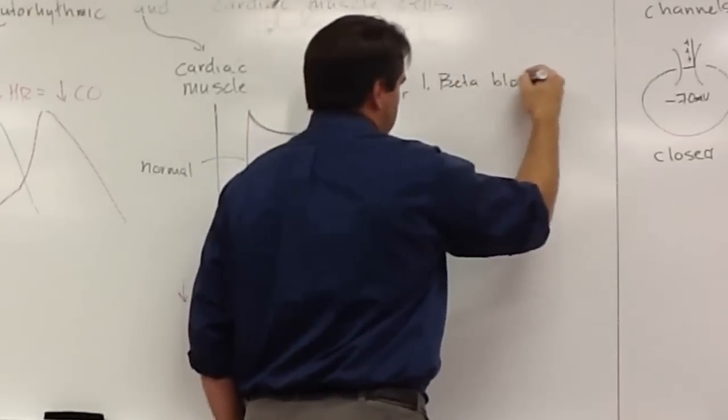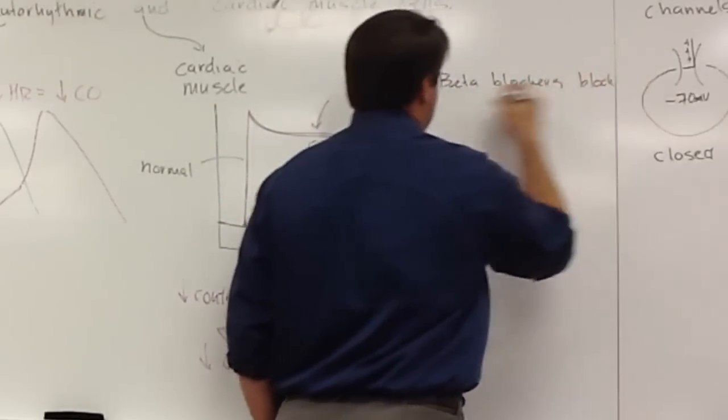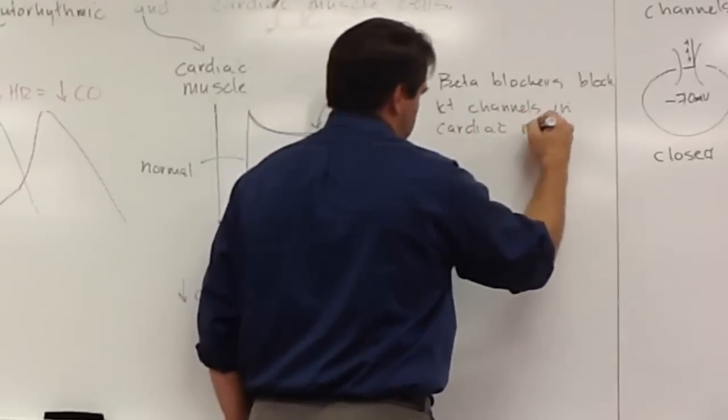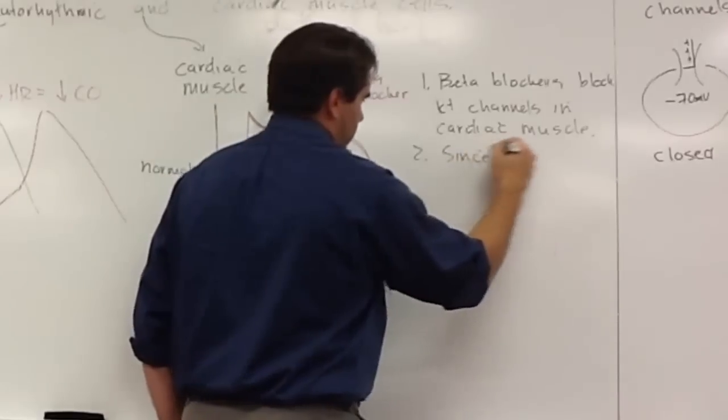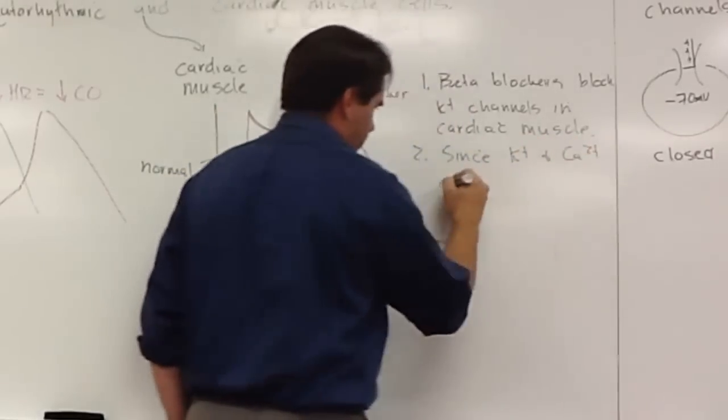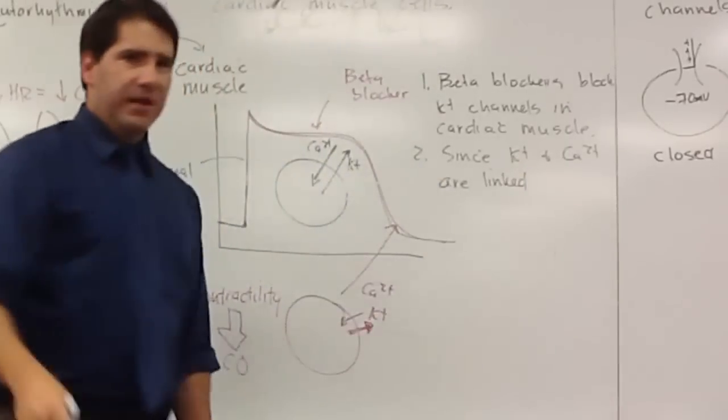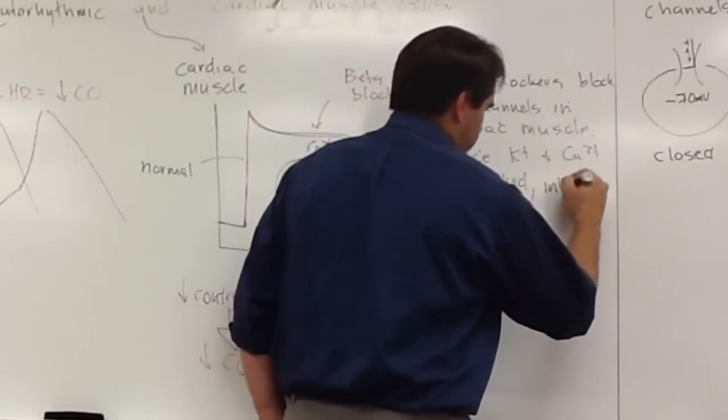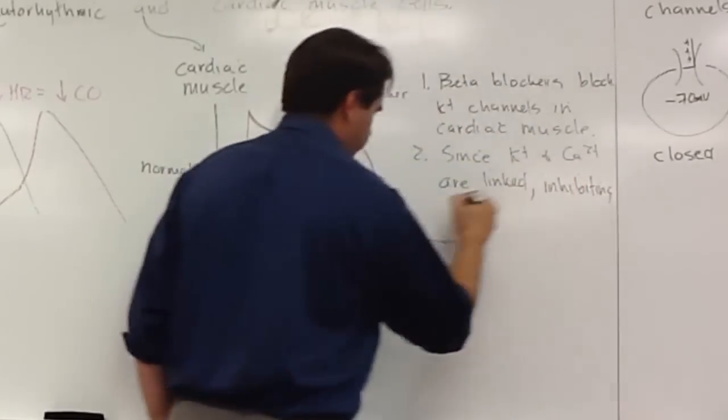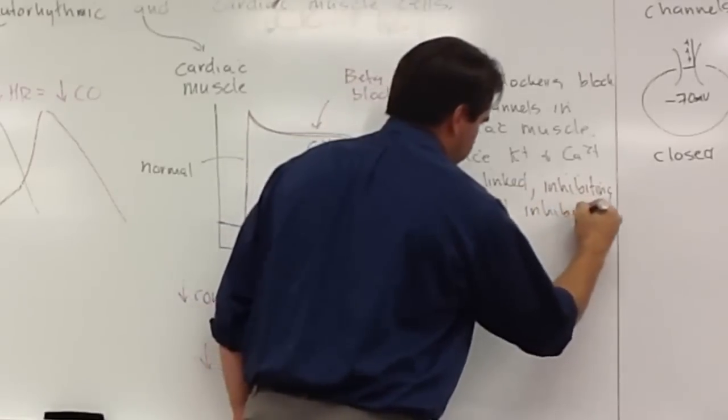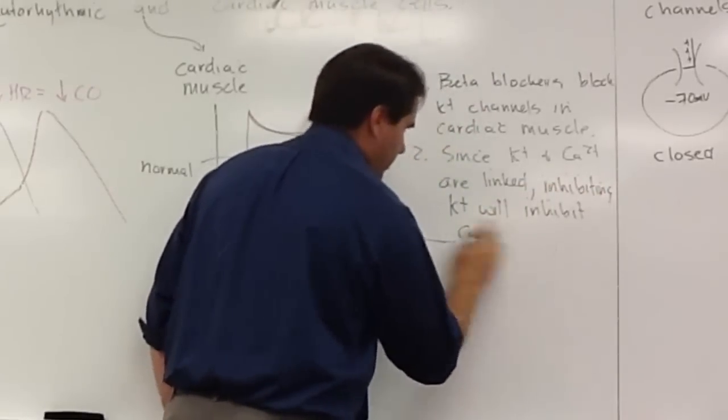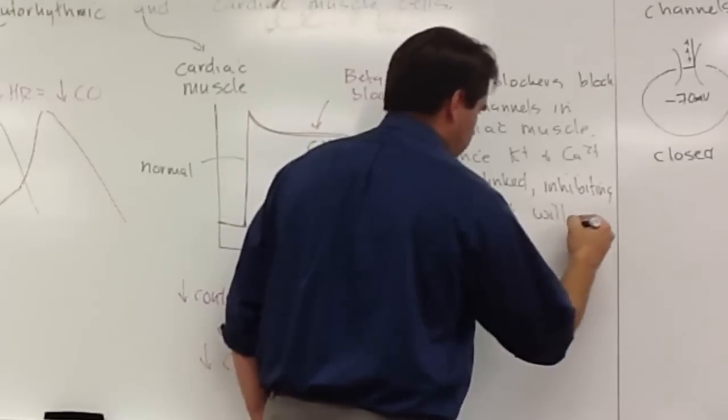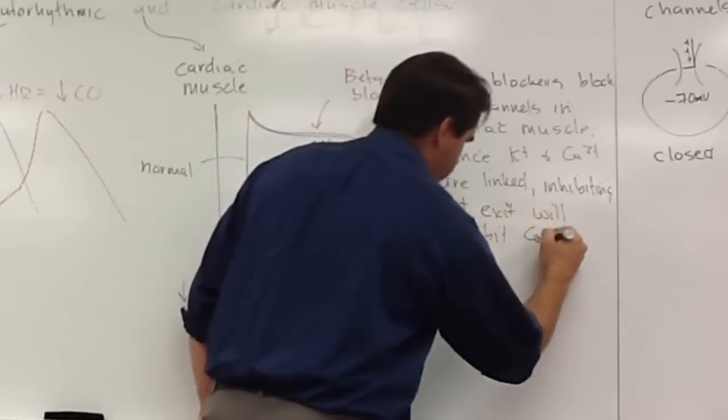Since potassium and calcium are linked, and I don't mean physically, they're just linked by charge. If one charge is going the other way, the other charge won't go in the opposite direction. Inhibiting potassium, let's say inhibiting potassium exit just to be more specific, will inhibit calcium entry.